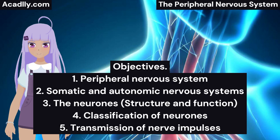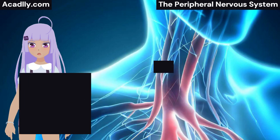3. The Neurons, Structure and Function. 4. Classification of Neurons. 5. Transmission of Nerve Impulses.